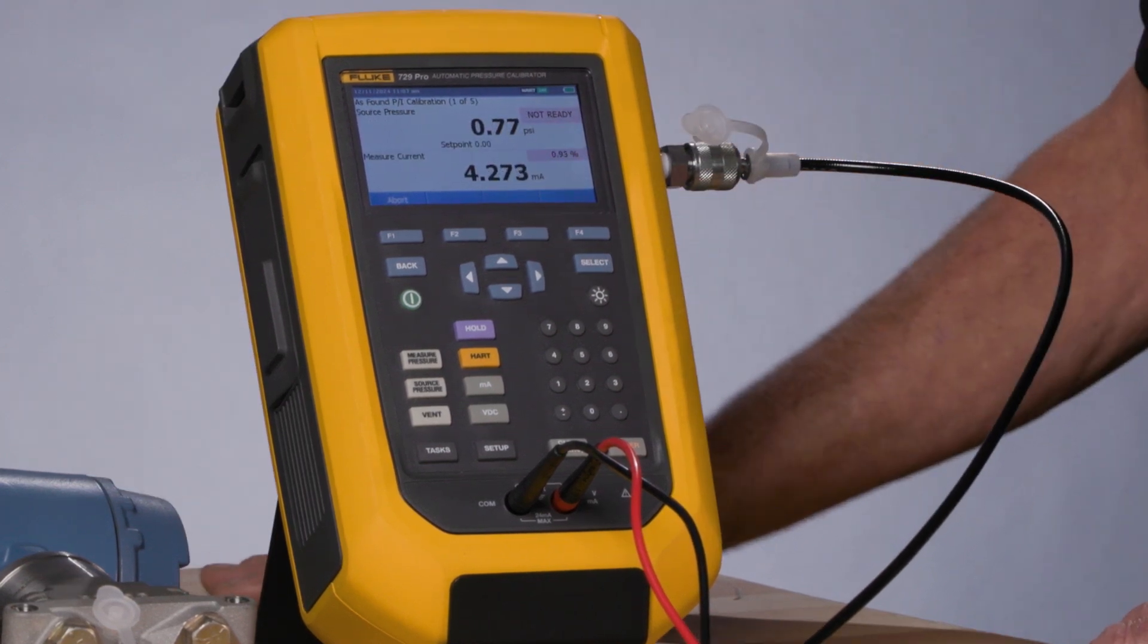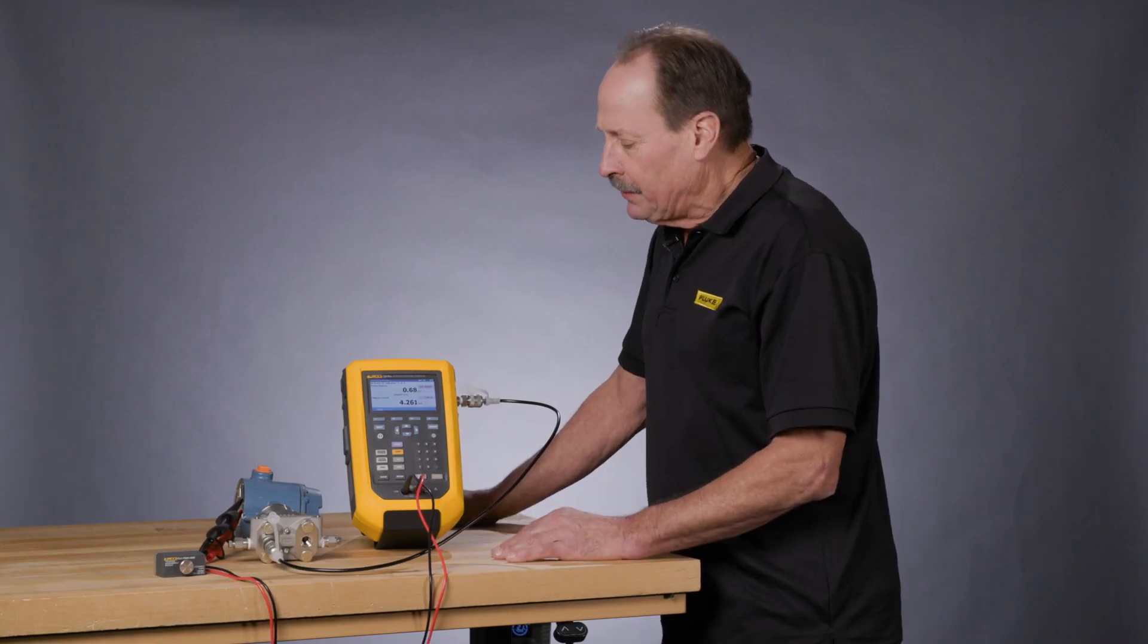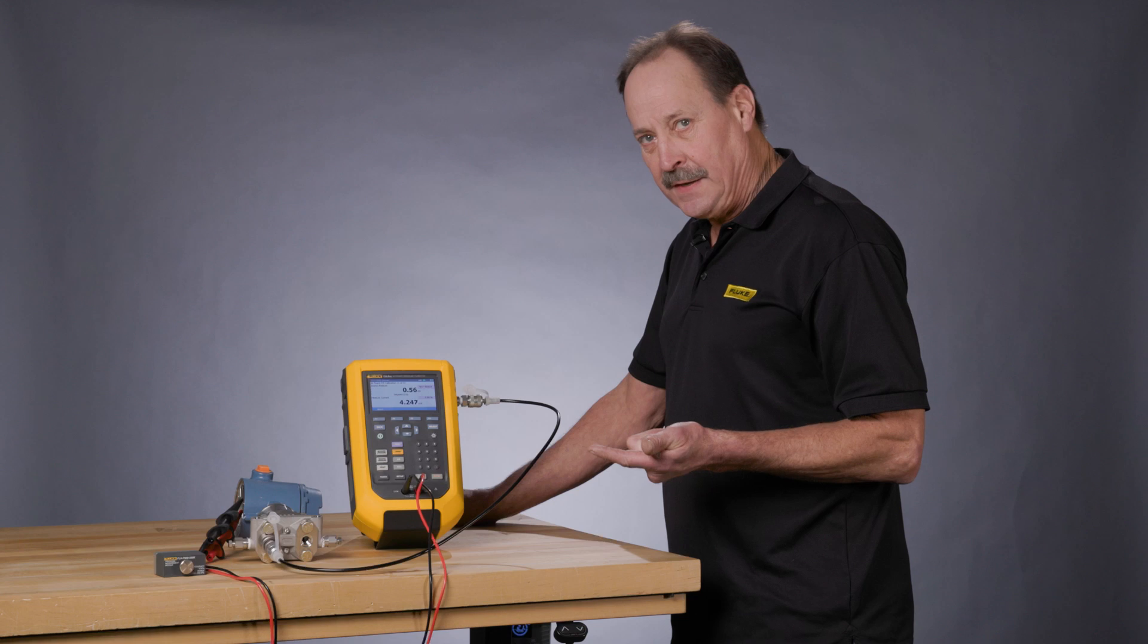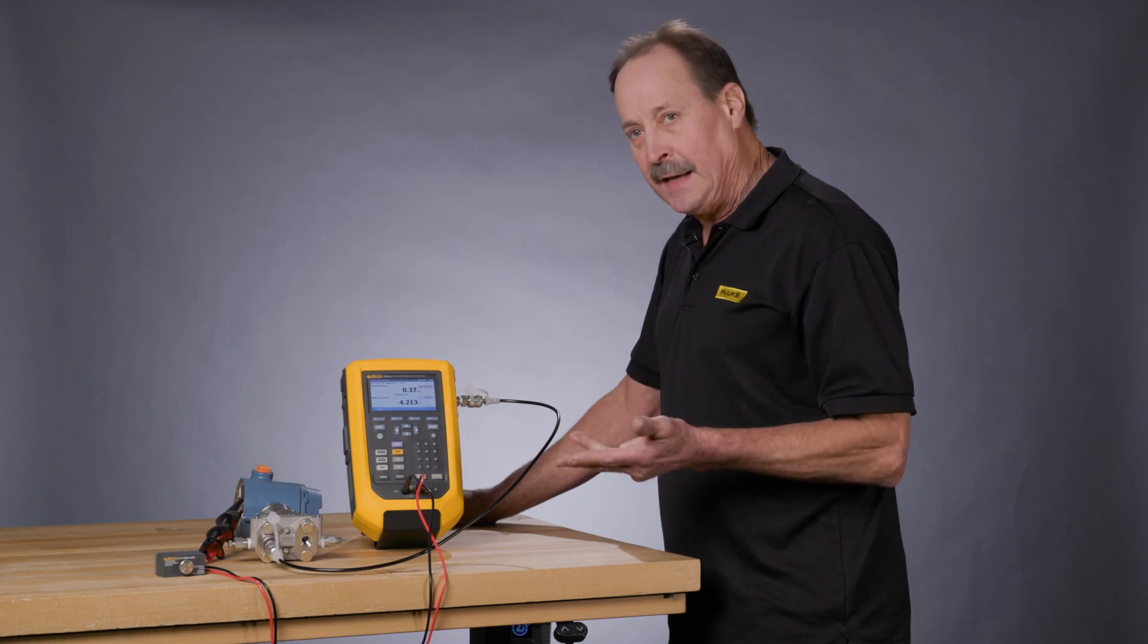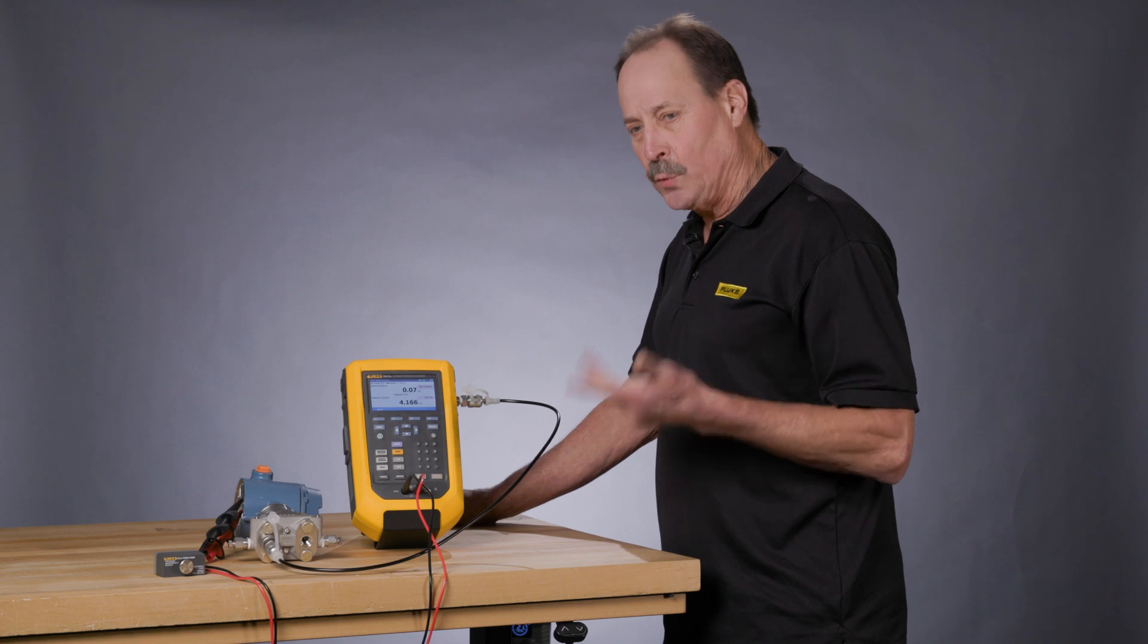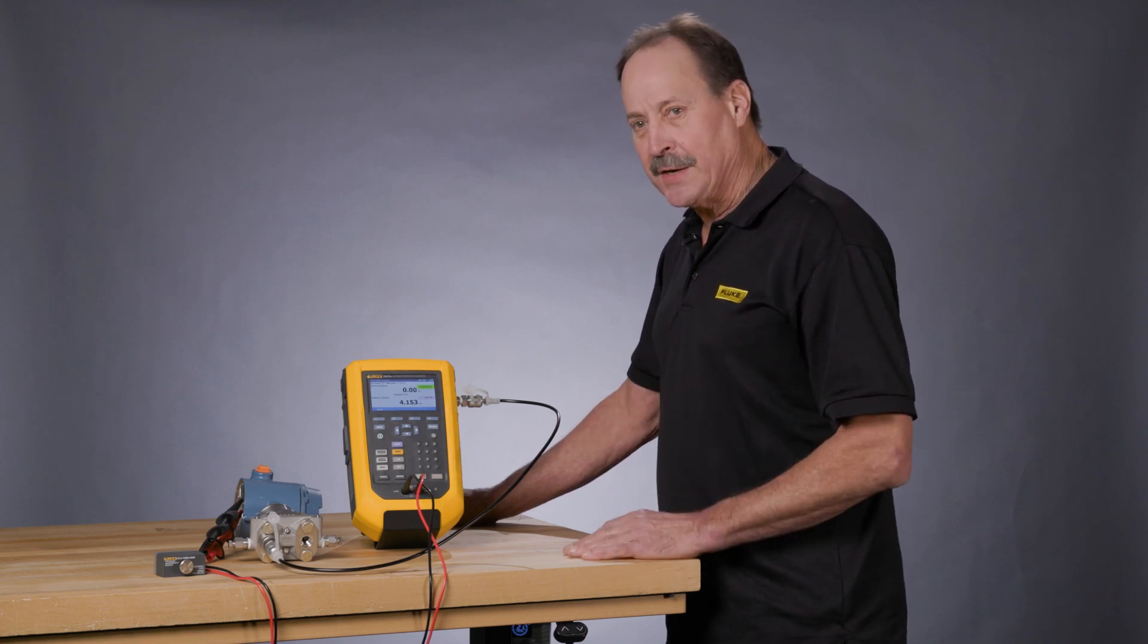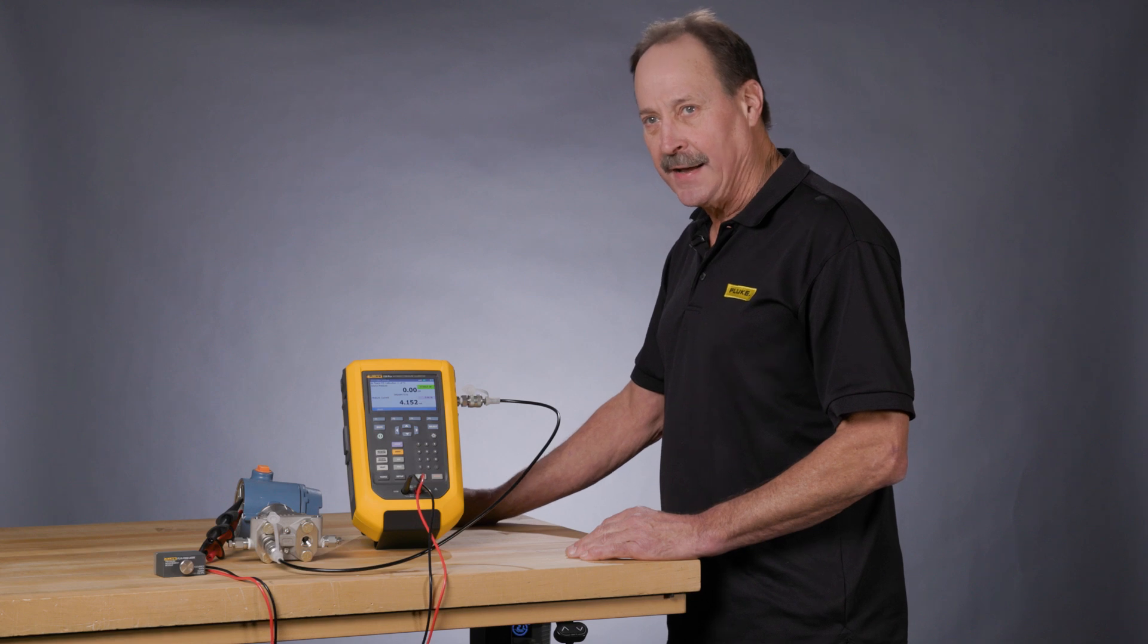now we're in the automatic calibration and documenting mode. The 729 Pro is going to apply pressures of 0, 50, 100, and then 50, and 0 psi, while recording the 4, 12, 20, 12, and 4 milliamp values for the specific pressures that are being applied and calculate pass, fail, and errors.